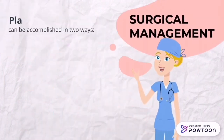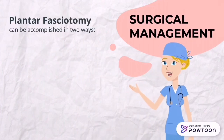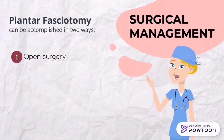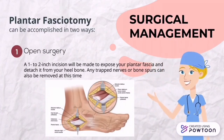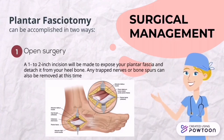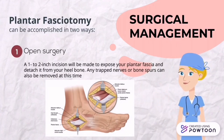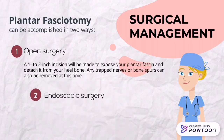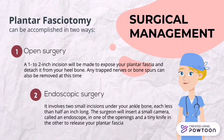Surgical procedures involving plantar fasciotomy can be accomplished in two ways. The first is open surgery, where a 1–2 inch incision is made to expose the plantar fascia and detach it from the heel bone; trapped nerves or bone spurs can also be removed at this time. The second is endoscopic surgery, which involves two small incisions under the ankle bone, each less than half an inch long. The surgeon inserts a small camera called an endoscope in one opening and a tiny knife in the other to release the plantar fascia.